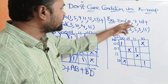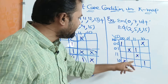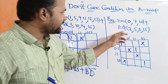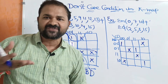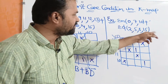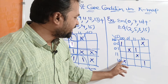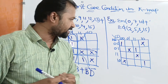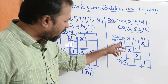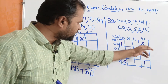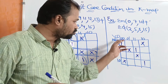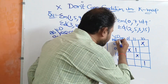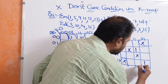Now let us solve the second problem: sigma M of 0, 7, 10 — for these three inputs, the output is 1. Plus sigma pi of 2, 5, 8, 15 — pi stands for don't care. So for cells 2, 5, 8, and 15, we have written X for don't care. At the opposite corners, we have two ones and two don't cares, so we can make those four corner cells as one group.